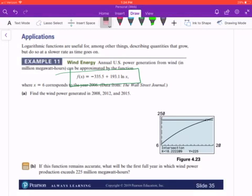We have a logarithmic function representing annual US power generation from wind, measured in million megawatt-hours. Although we'll do more applications in Section 4.4, this is one of them. The output, f(x) or y value, represents the power generation in million megawatt-hours.